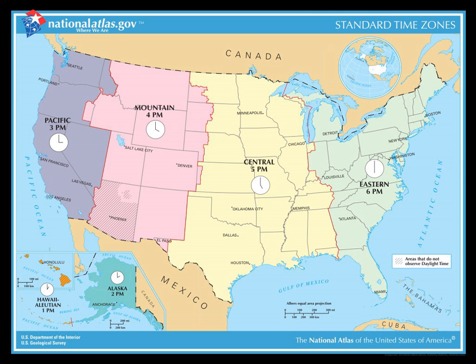Generally, time zone boundaries have tended to shift westward. Places on the eastern edge of a time zone can effectively move sunset an hour later by the clock by shifting to the time zone immediately to their east. If they do so, the boundary of that zone is locally shifted to the west. The accumulation of such changes results in the long-term westward trend.